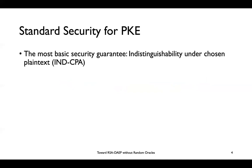We need secure public key encryption schemes. One of the most basic security guarantees that we define in cryptography is called indistinguishability under chosen plaintext, or IND-CPA. This is defined as a game between a challenger and an adversary. We require that the probability of the adversary winning the game should be negligible if we want a secure public key encryption.